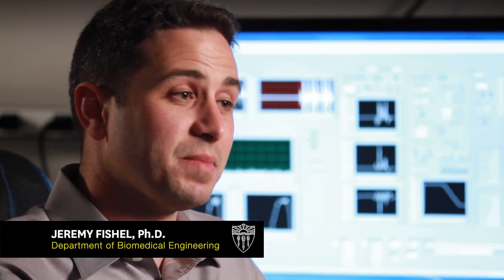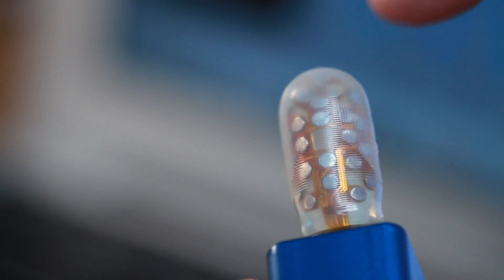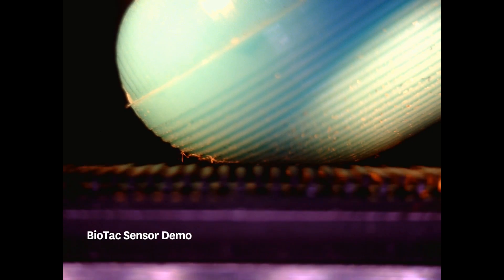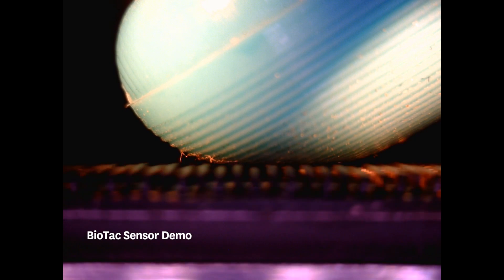So the BioTac is a fluid-filled fingertip that's the same size as the human finger. We've also implemented fingerprints on the surface of the BioTac so that it is able to sense textures the same way that humans can. And in particular, it's very good at picking up the vibrations that you actually get as you run your finger over different textured surfaces. And those patterns of vibrations are what you use to identify, say, a piece of cotton from a piece of wool.